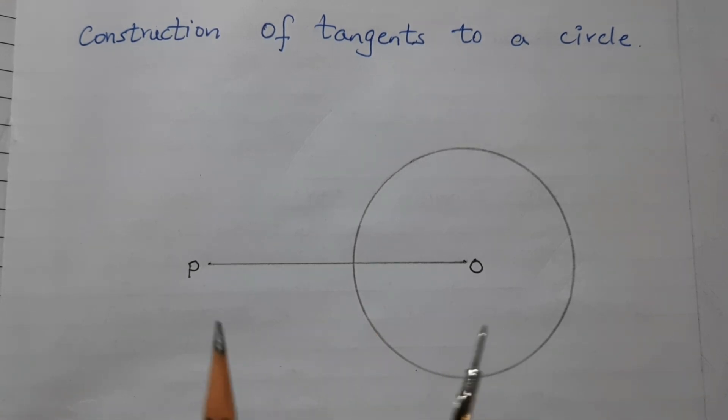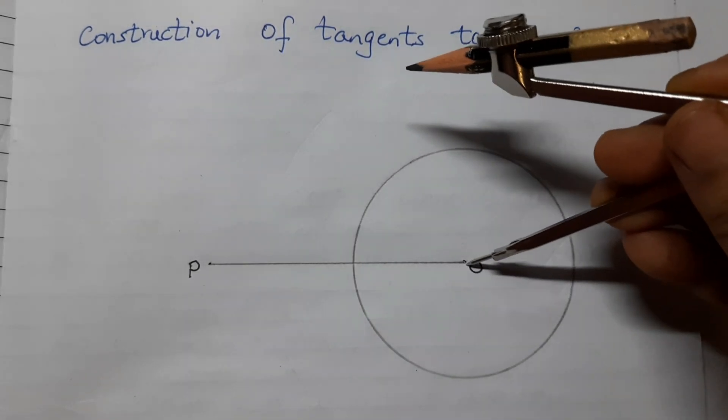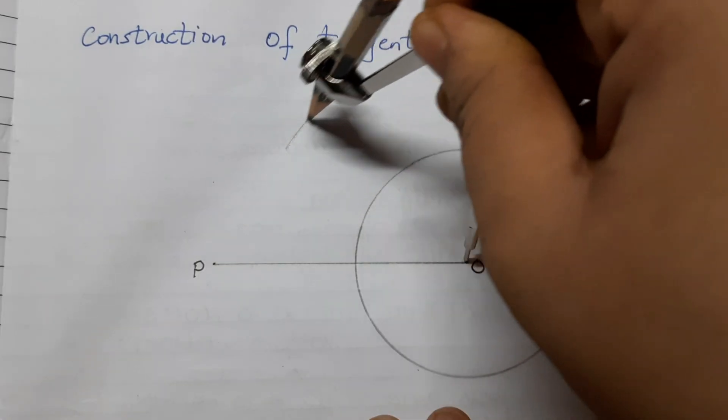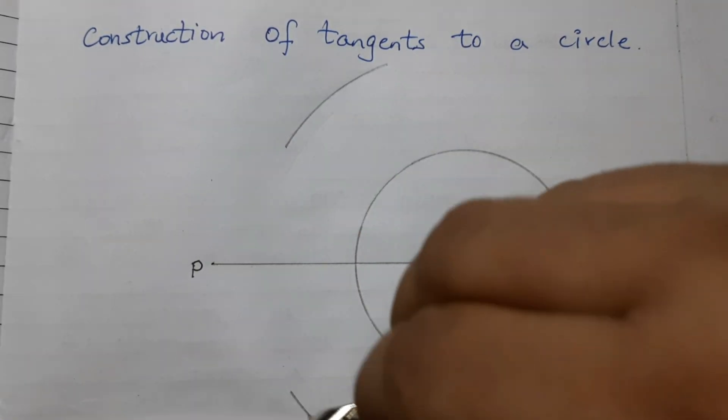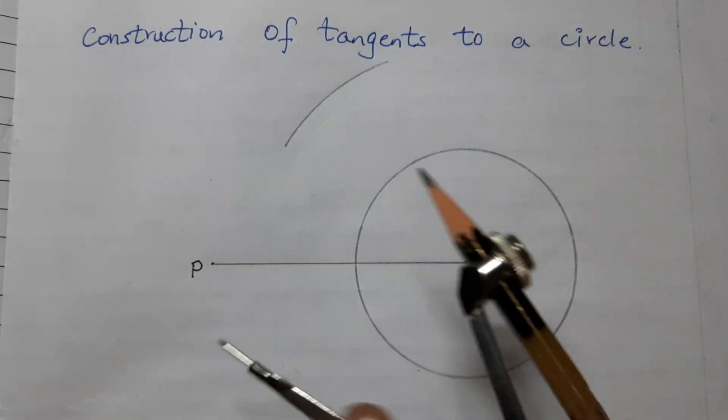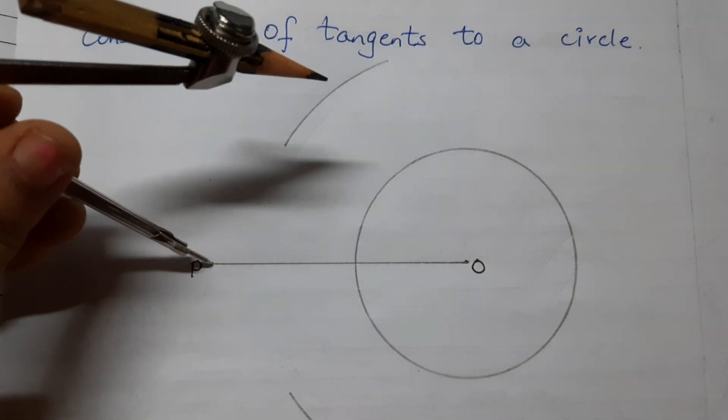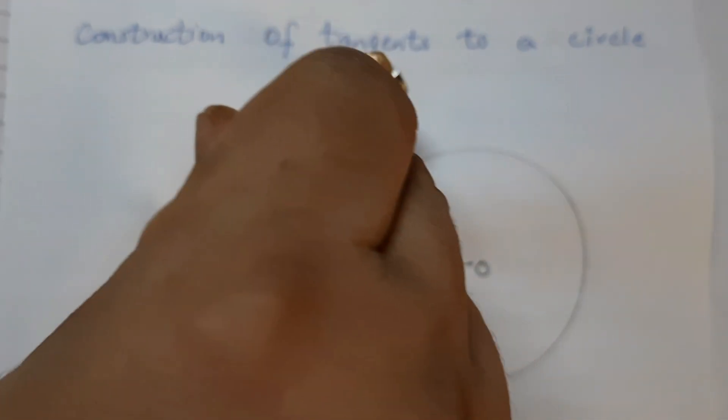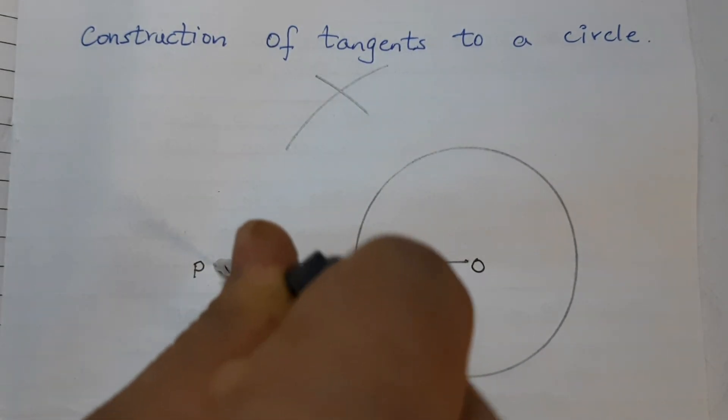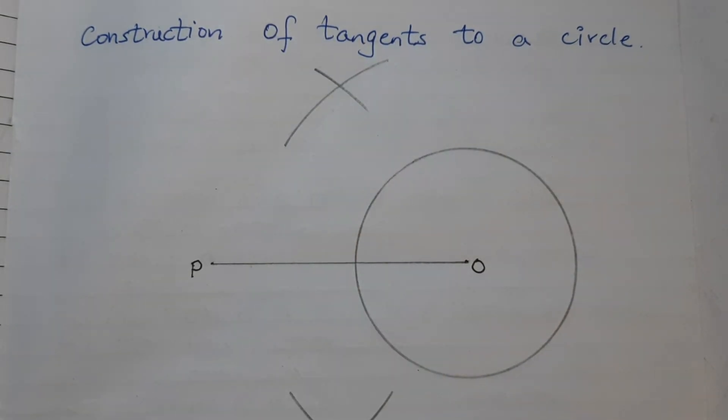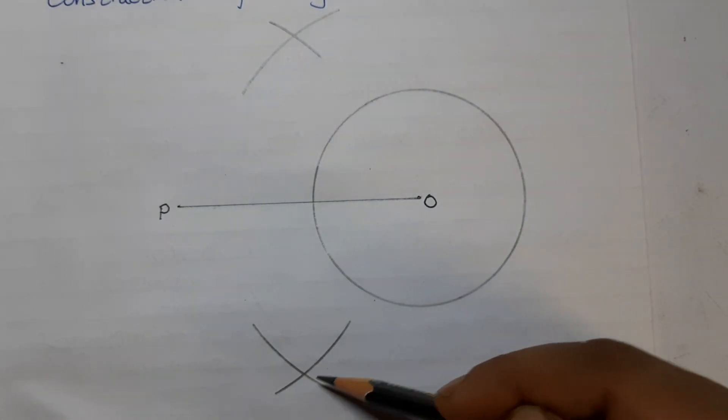So take more than half the length of PO and draw two arcs, one above the line and the other below the line. With the same length from point P, draw two arcs intersecting the previous two arcs. Join the intersection points.